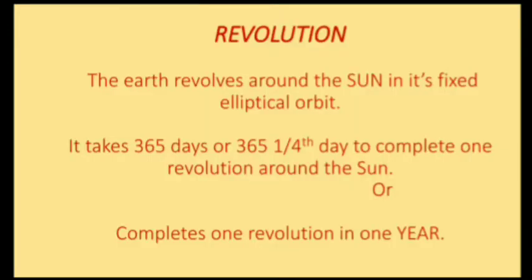Earth's revolution: the Earth revolves around the Sun in its fixed elliptical orbit. It takes 365 days or 365 and one-fourth days to complete one revolution around the Sun. An elliptical orbit is like an oval shape — you can say in simple language like an egg. While revolving around the Sun it takes one year.